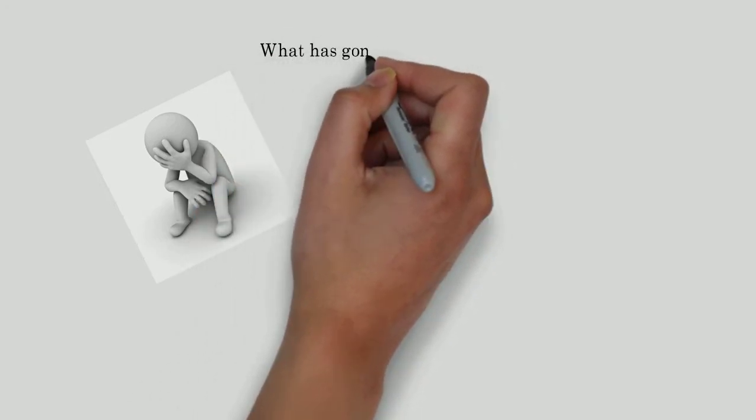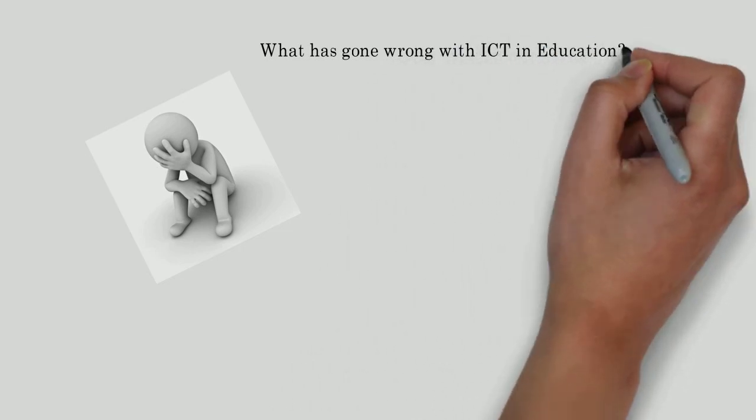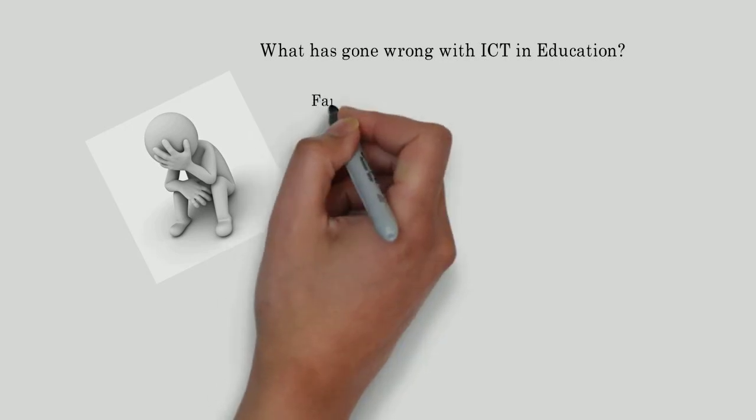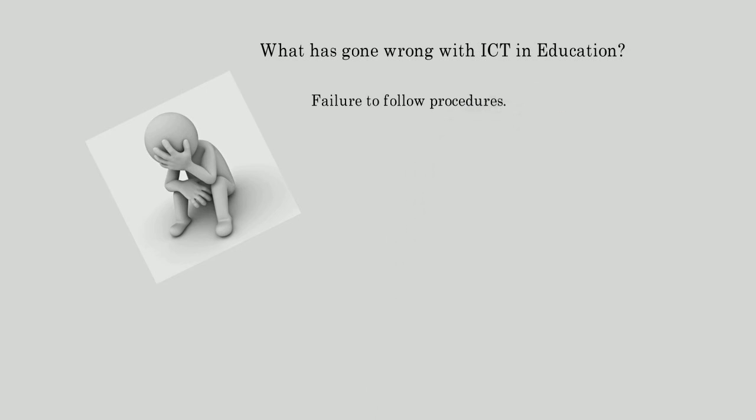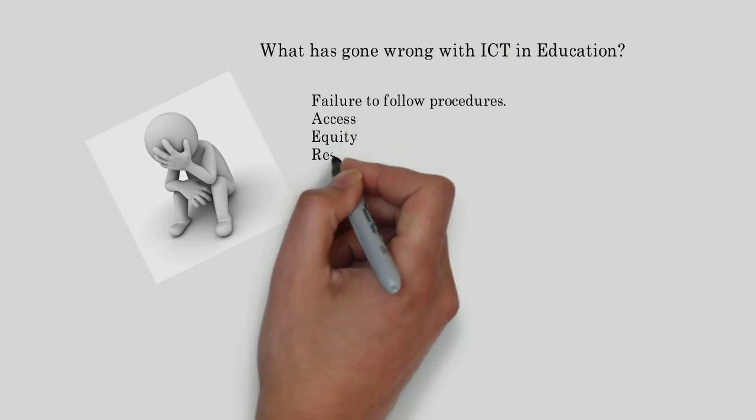So what has gone wrong with ICT in education? Failure to follow procedures. There are other issues such as access, equity, and resources.